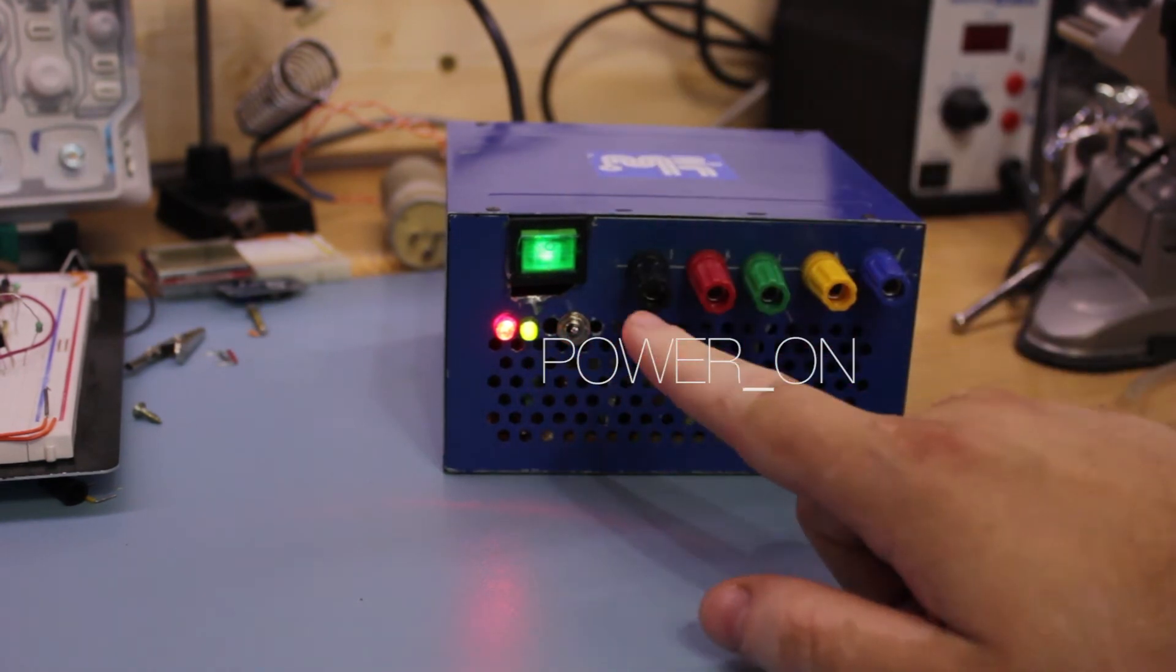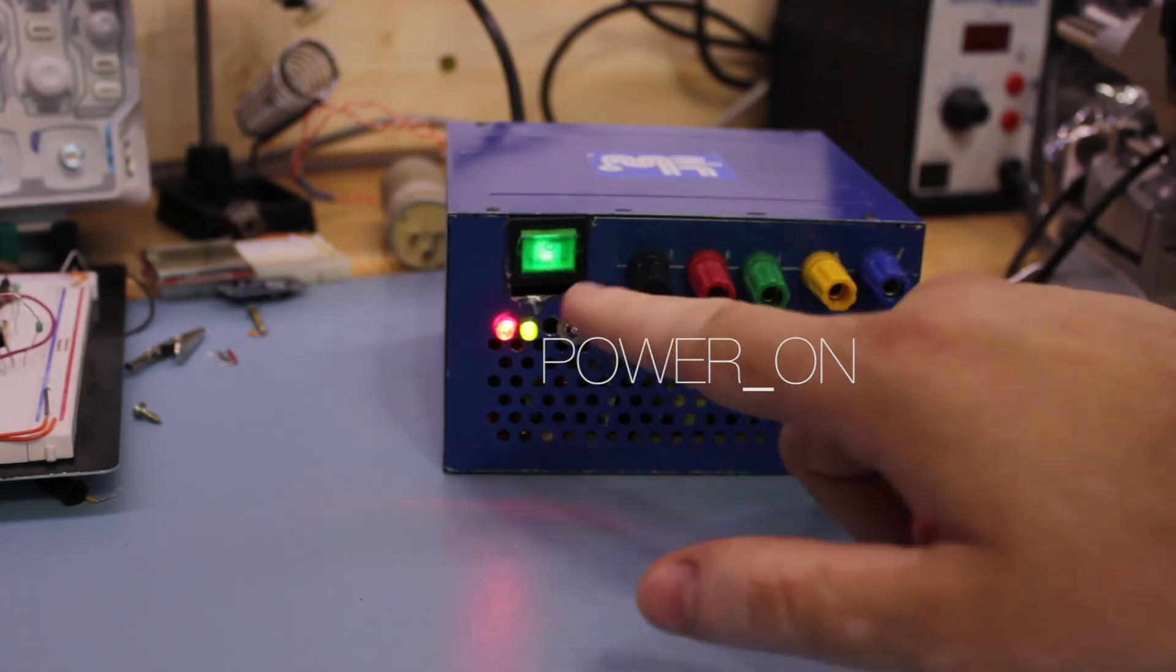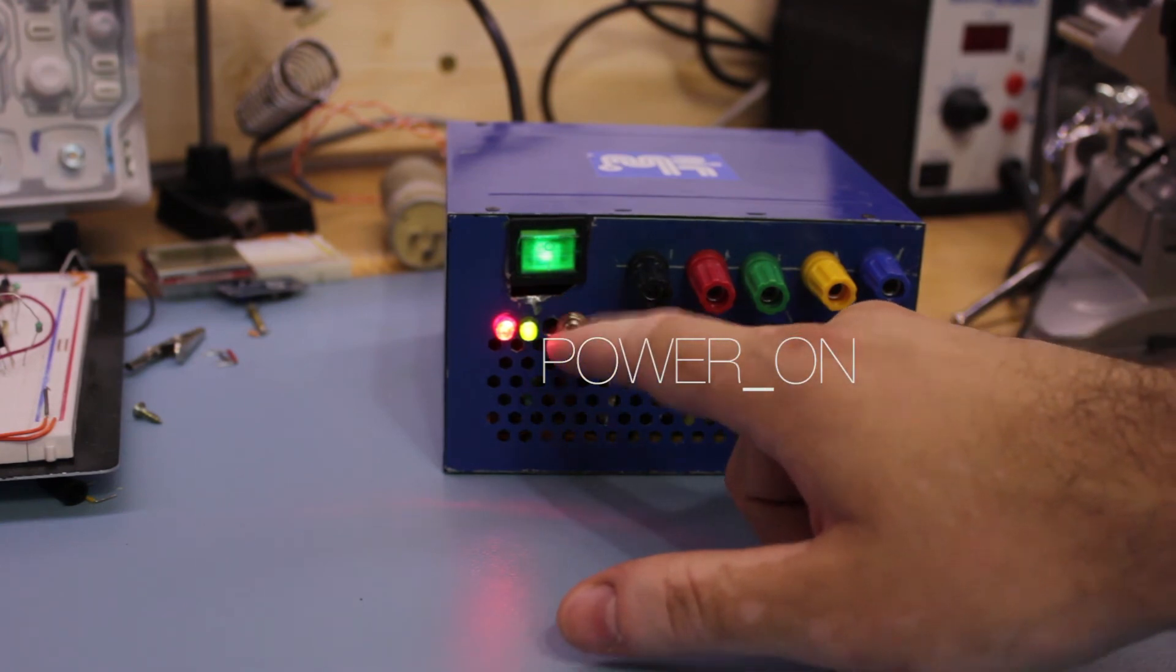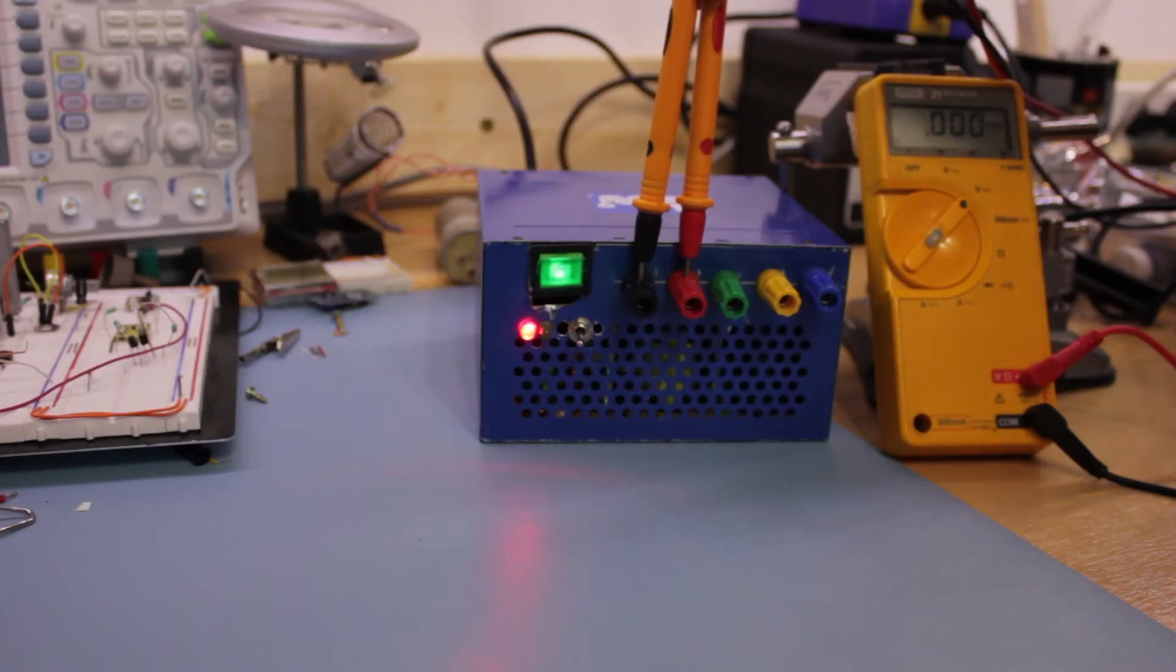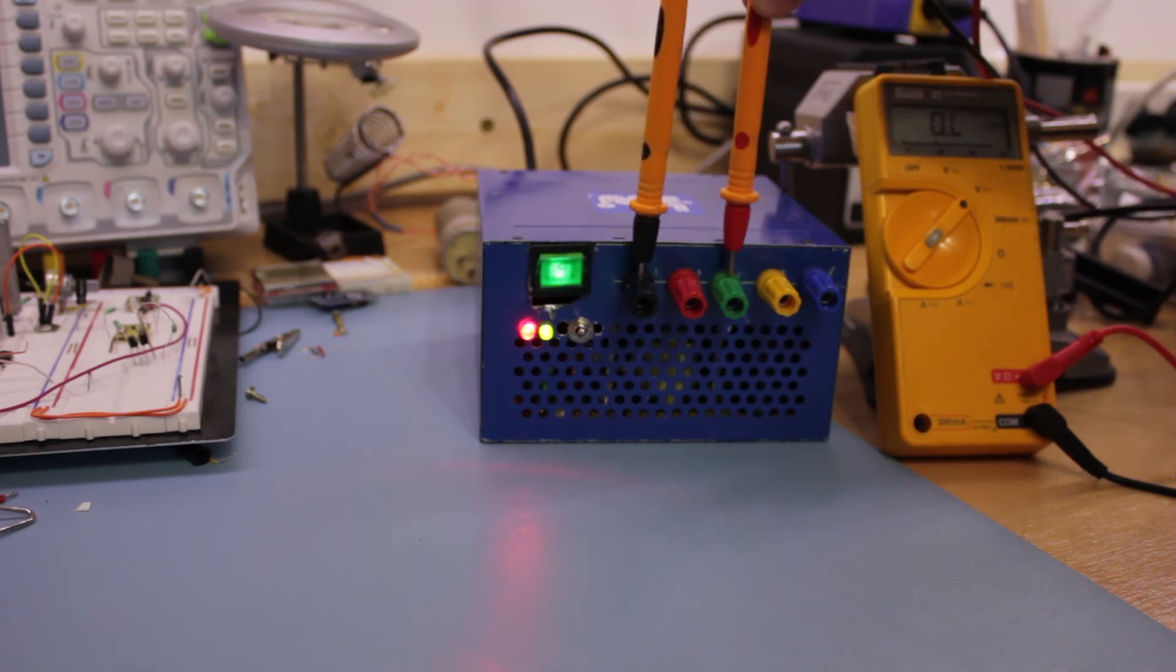With the small switch turned on, the green LED turns on letting us know that the power rails are activated. And I check that all the voltages are correct as they should be.